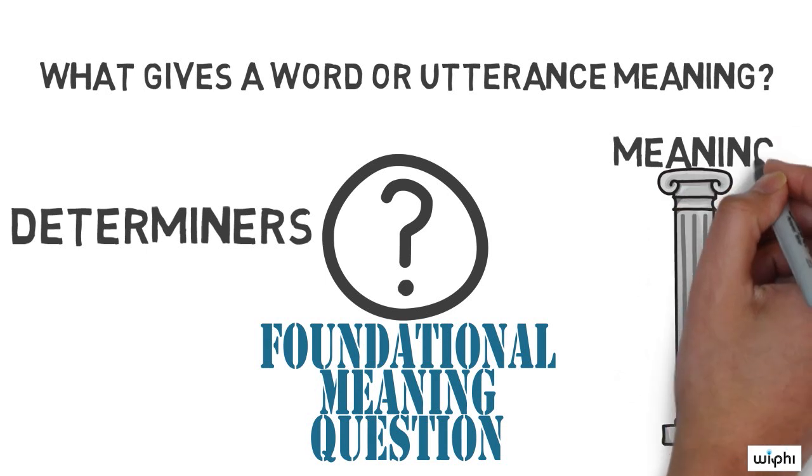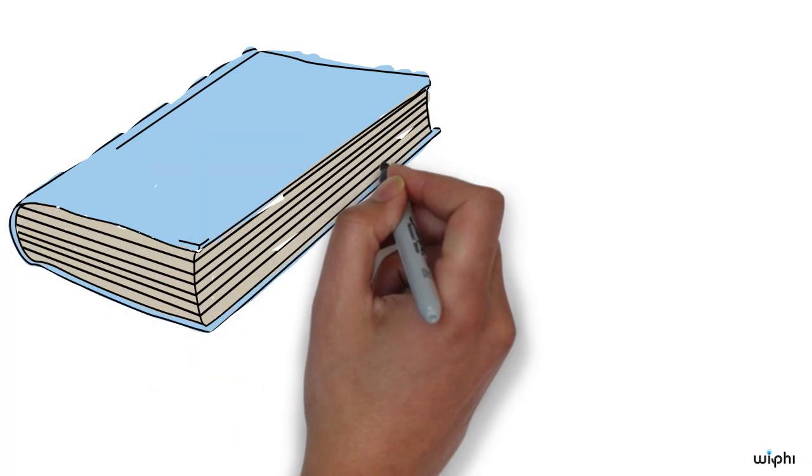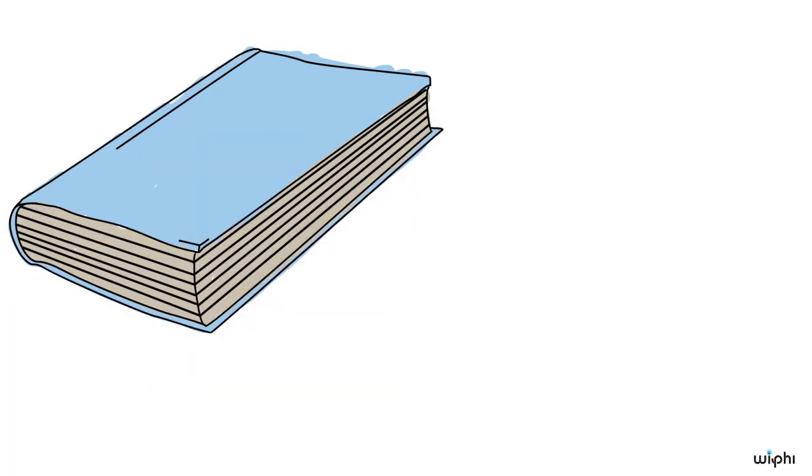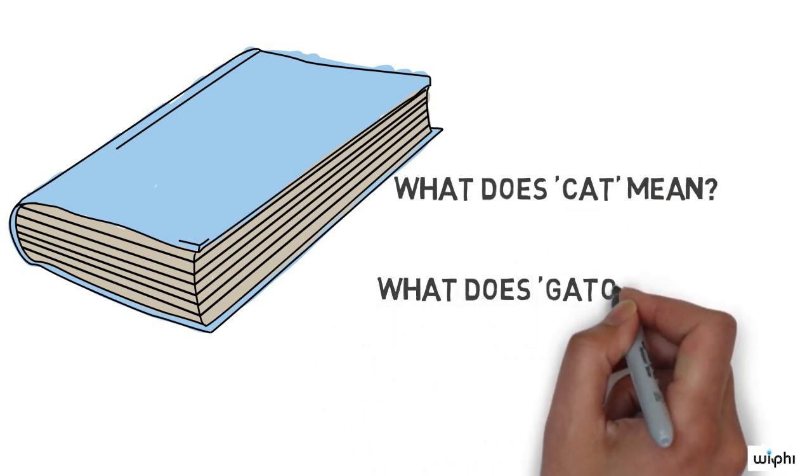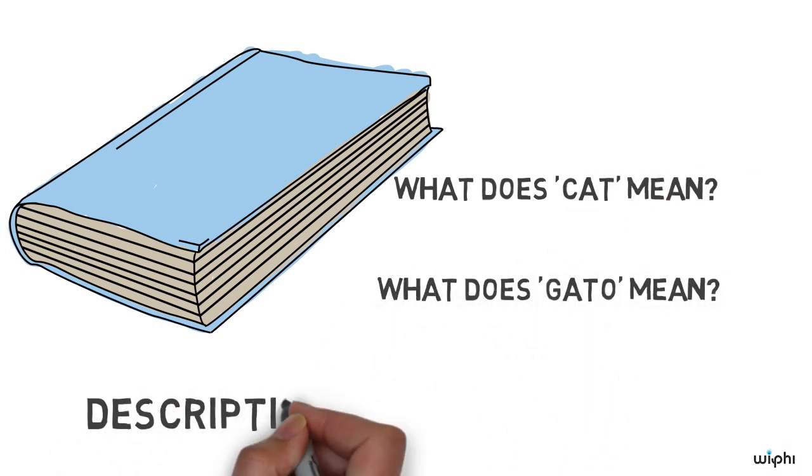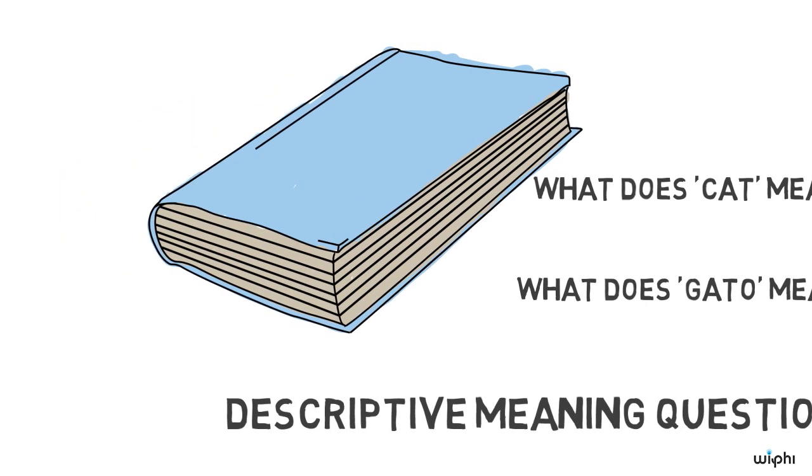In contrast, one might also ask questions about what a particular word or utterance means. Dictionaries classify these bits of information. Questions like, what does cat mean? Or, what does gato mean? are descriptive meaning questions. When we ask descriptive meaning questions, we're not asking what gives the word cat meaning, but what meaning it actually has.